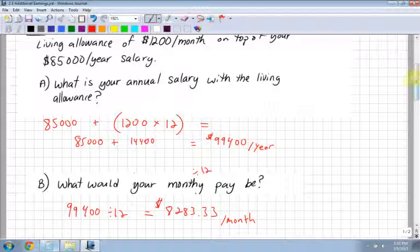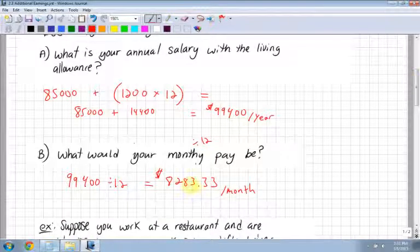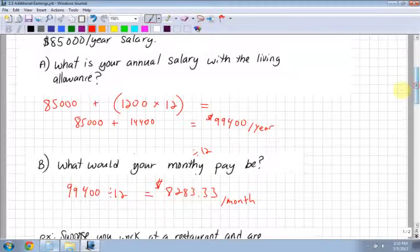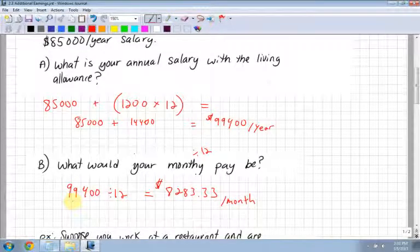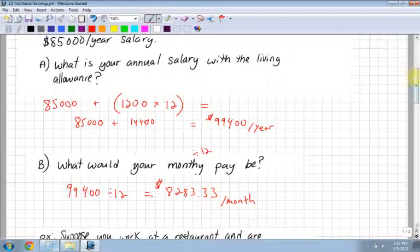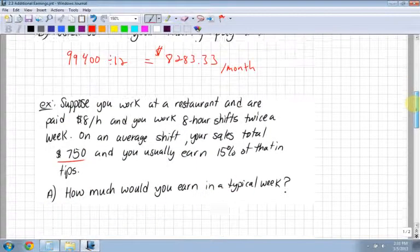That is a lot of money per month, but keep in mind a lot of that would go to taxes. Some provinces, if you make over a certain amount, sometimes half your money goes to taxes if you're up at a certain tax bracket. You might only be making $4,000 a month take-home.